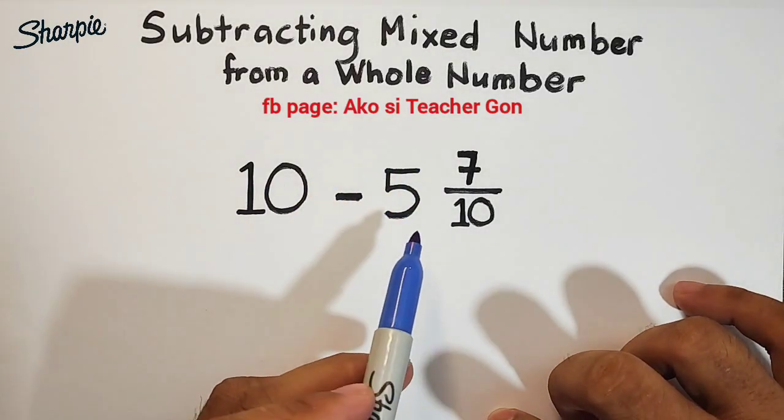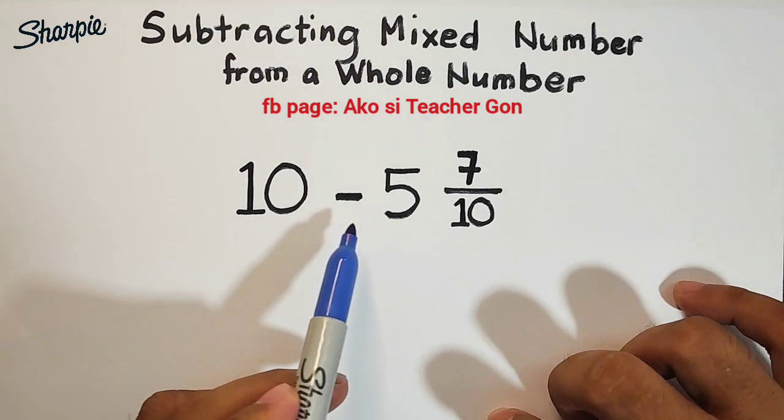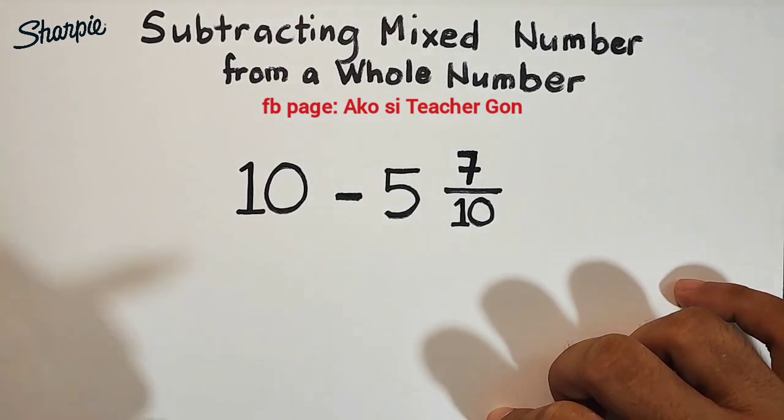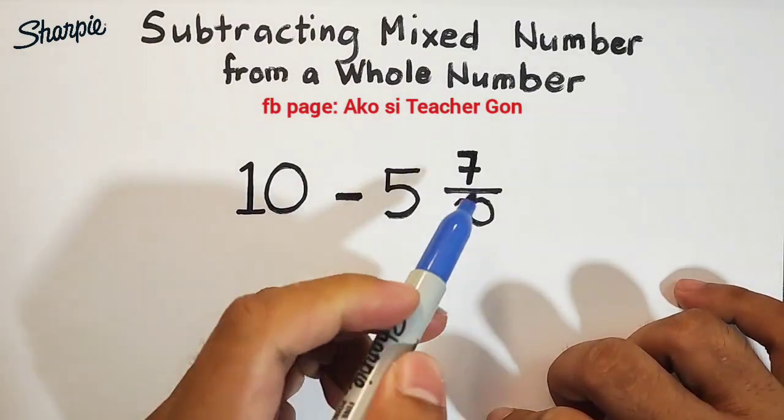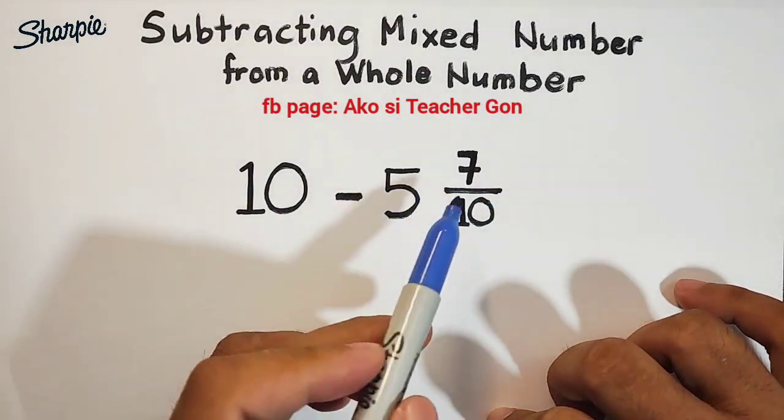We will subtract the mixed number 5 and 7 over 10 from 10. So how are we going to subtract? Hindi pwede na 10 minus 5 because we still have this fraction. 10 minus 5 is not allowed because we still have this fraction 7 over 10.